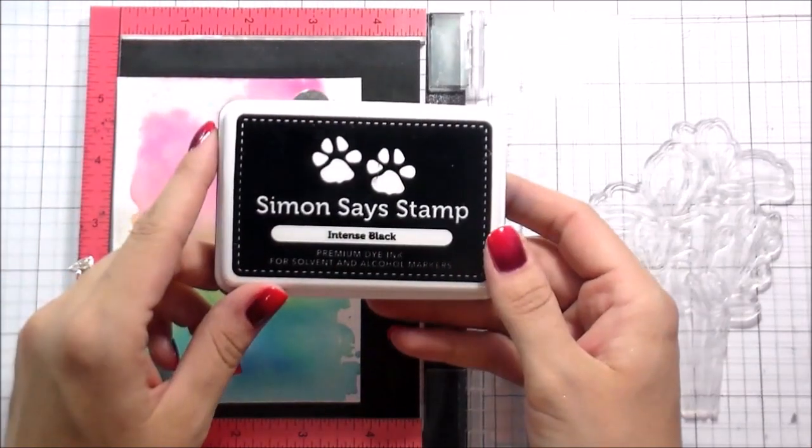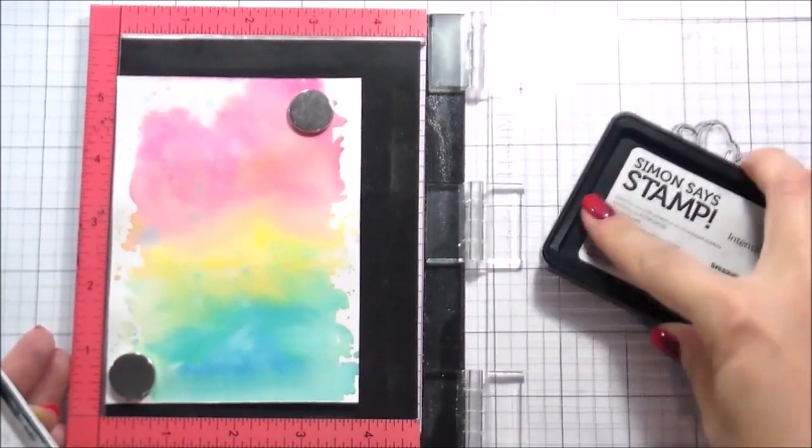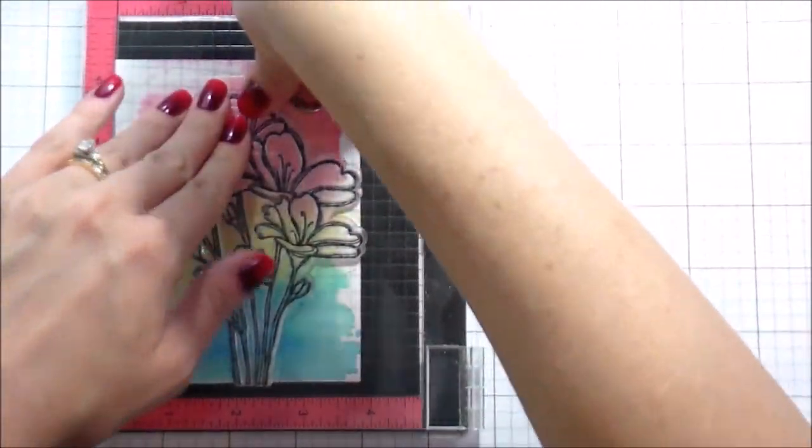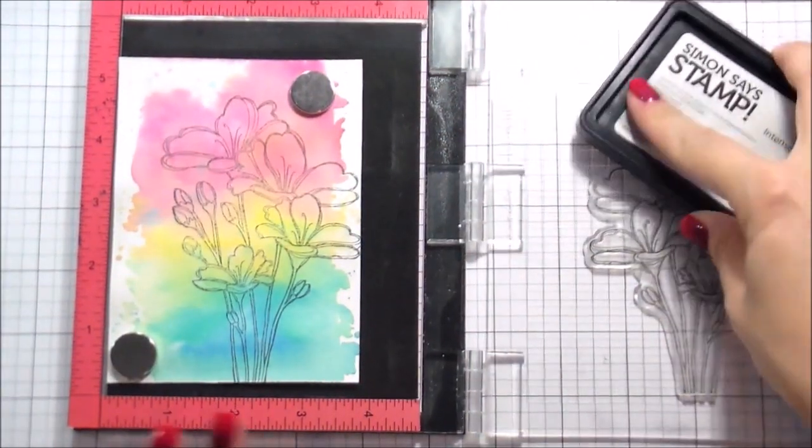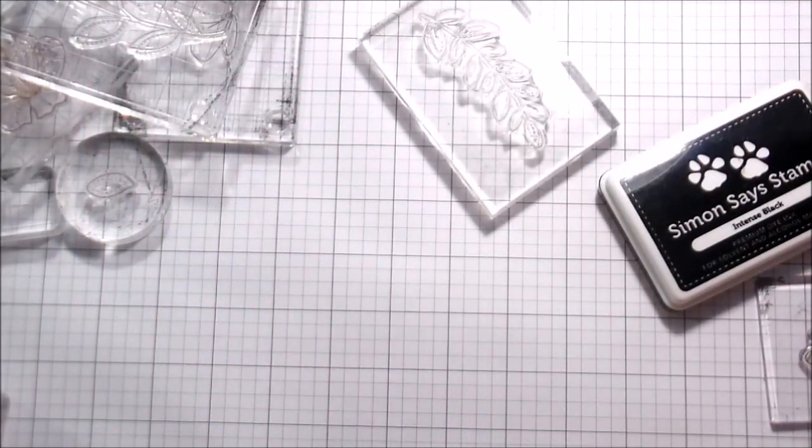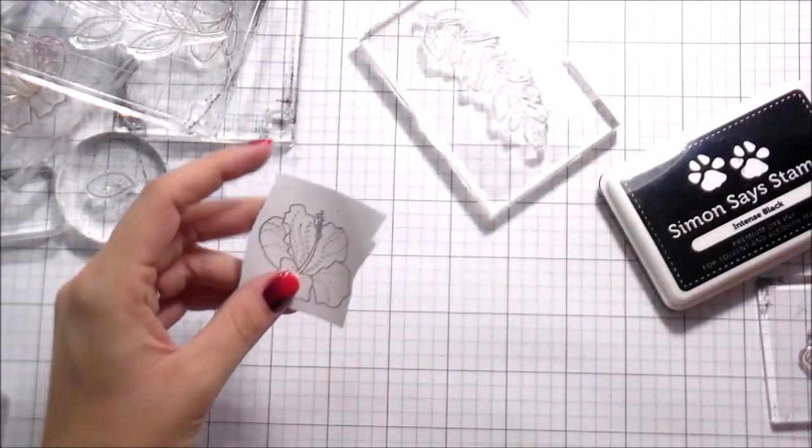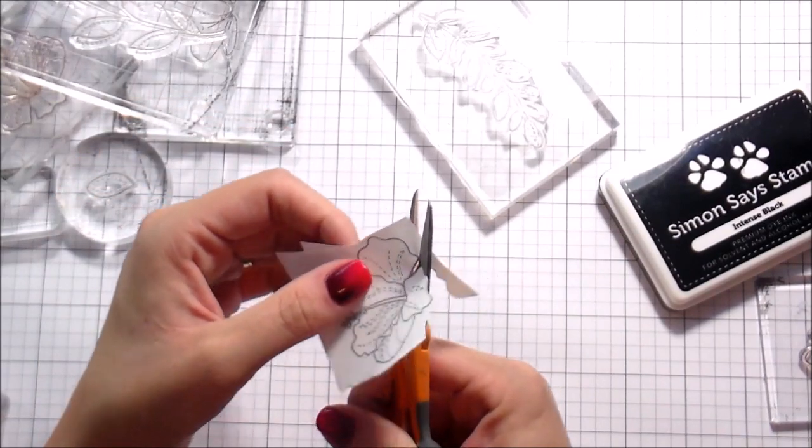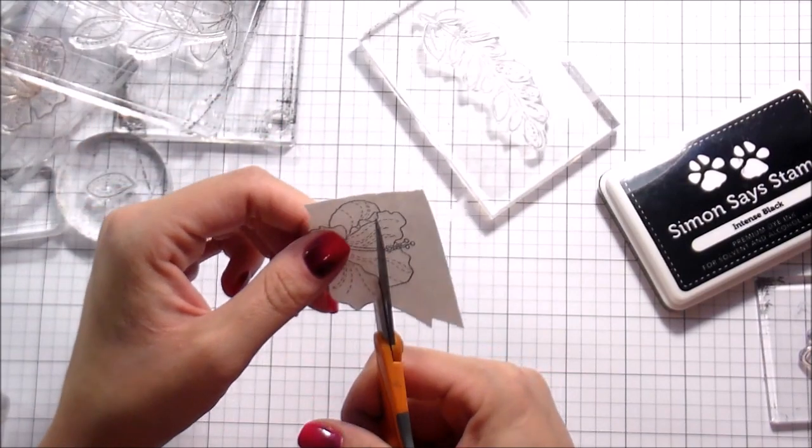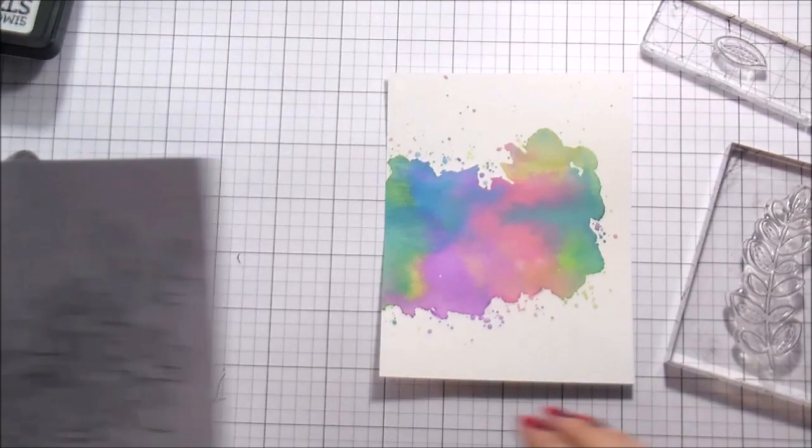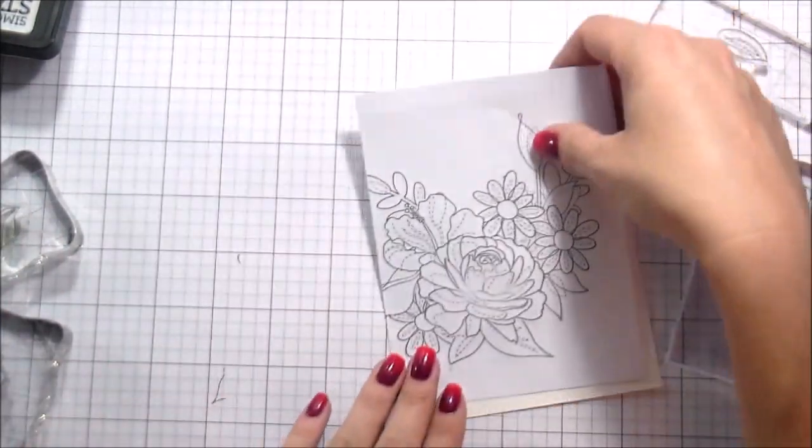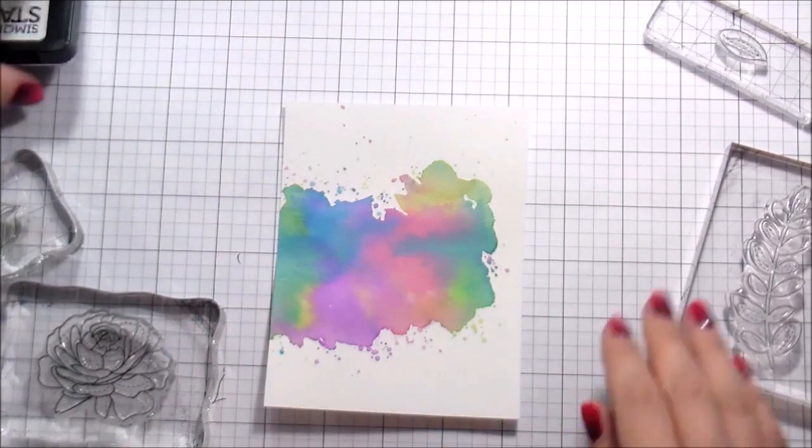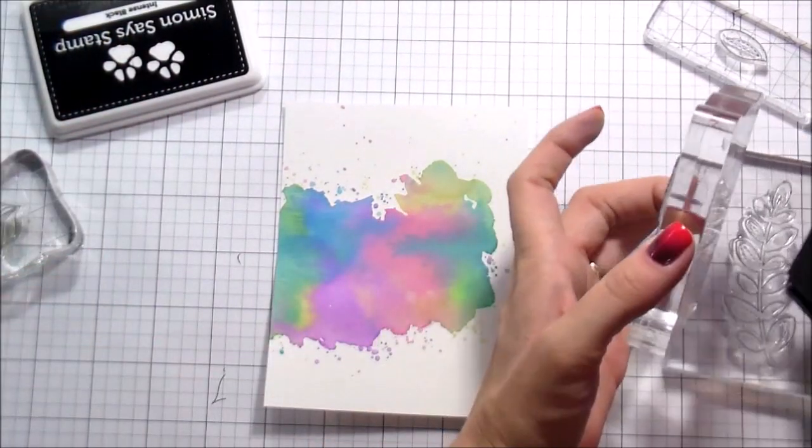We're going to get into the stamping now. I'm using my Mini MISTI and some Intense Black Ink from Simon Says Stamp. This is Copic Safe, that's why I chose it. For this first one, I wanted to show you that if you own a bouquet stamp, that will totally work. When you're stamping on watercolor paper, sometimes it's a bit rough, so I had to stamp it a couple of times. For the rest of the cards, I did not use bouquets. I created my own with masks. I just stamped right on post-it note tape and I'm trimming this out with scissors to create masks so I can build my own bouquet.